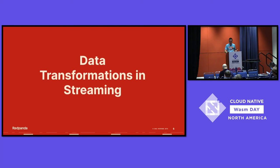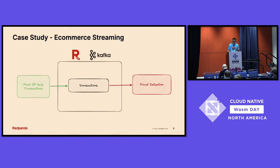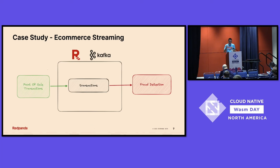I'll talk more about some of the interesting bits of Red Panda's architecture in a little bit. I'm going to start by talking about what data transformation is in a streaming pipeline when you're producing and consuming events. This is a quick example of an e-commerce application use case using any Kafka-compatible API like Red Panda or Apache Kafka itself. The use case is transactions happening in the business — those get pushed into a topic called 'transactions,' which has information about transaction amounts, who made the transaction, credit card information, and so on. That gets consumed downstream by a separate application doing fraud detection.